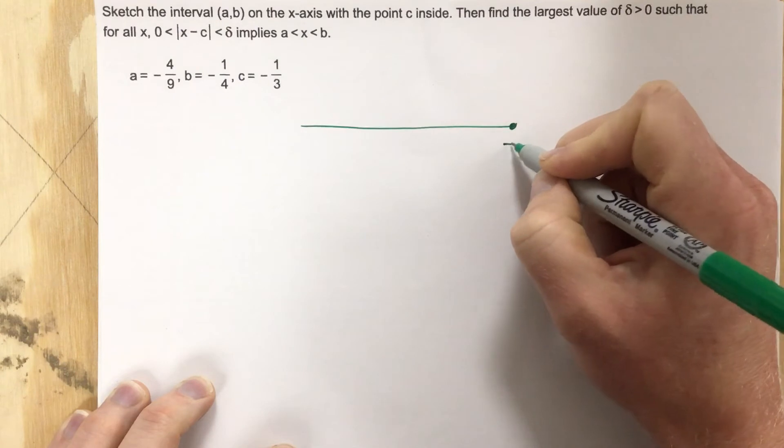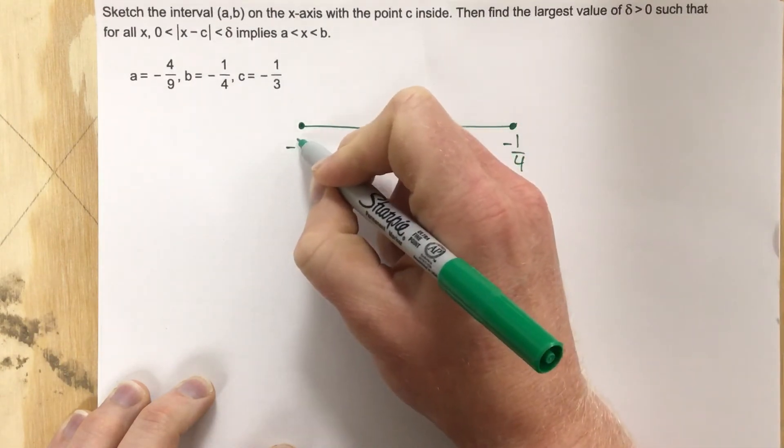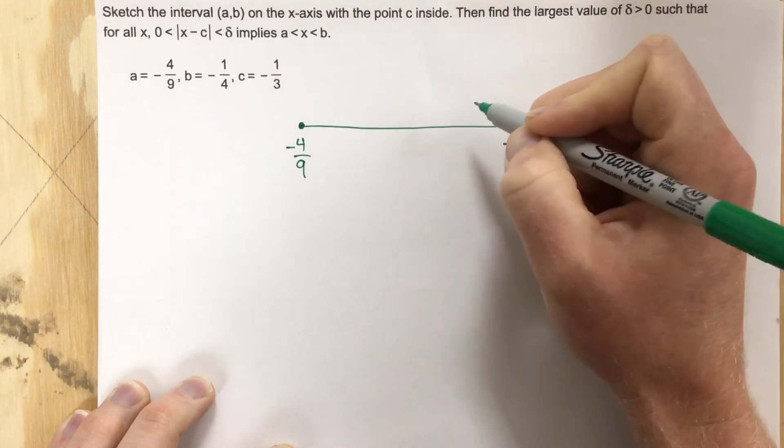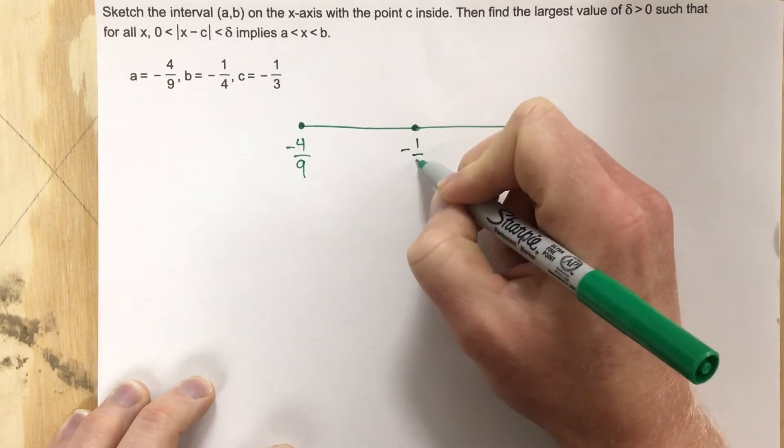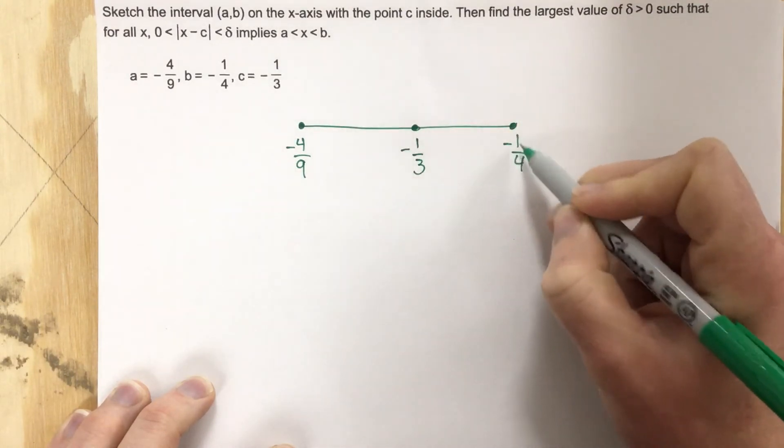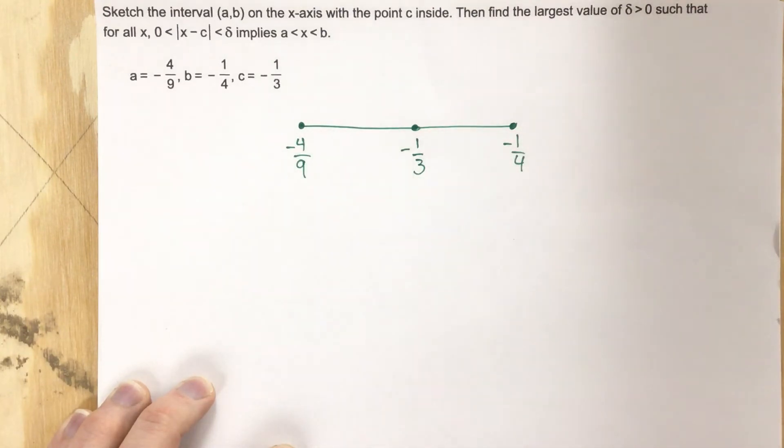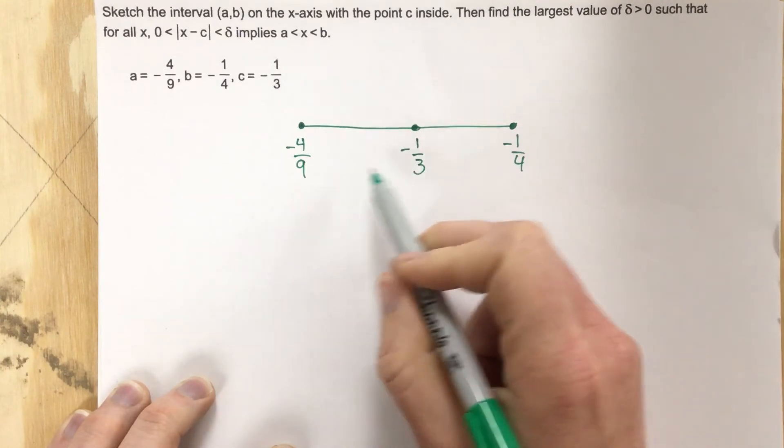a is over here and it's negative four ninths, and then we have c in the middle, and c is negative one third. We're not sure if it's closer to one quarter or if it's closer to negative four ninths. These could be the exact same gaps between or it could favor to one side or the other.